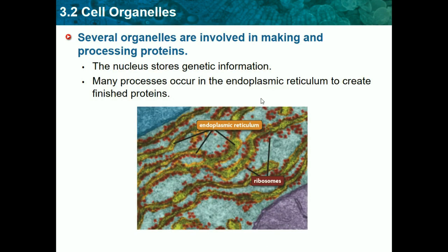Many processes occur in the endoplasmic reticulum to create finished proteins. The endoplasmic reticulum, or ER for short, surrounds the nucleus and looks like a bunch of stringy structures combined together. I'll show you an image of a cell and point out all the different organelles. The endoplasmic reticulum helps create proteins.